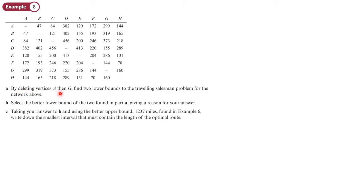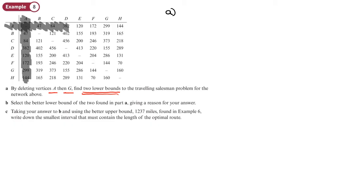By deleting vertex A and then G, find two lower bounds for the travelling salesman problem for the network above. We do A first, then G, to find two lower bounds. This is going to use Prim's algorithm. The first thing we'll do is remove A — get rid of the row and column for A — and then start at B.